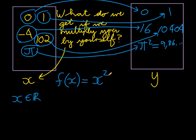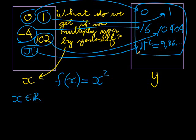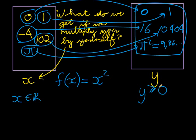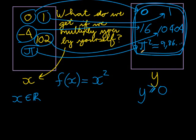What answers can I get? Is there any answer I can't get? You should recognize that I can never get a negative answer — any number multiplied by itself can be 0, yes, and it can be positive, but it can never be less than 0. So y must be greater than or equal to 0. My range can only be greater than or equal to 0. Those are the only values I can obtain.